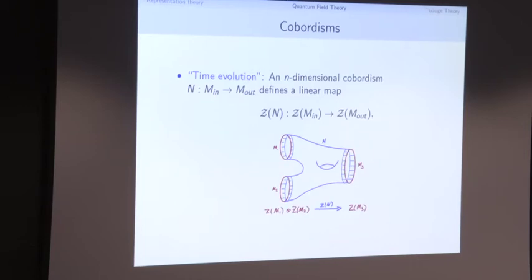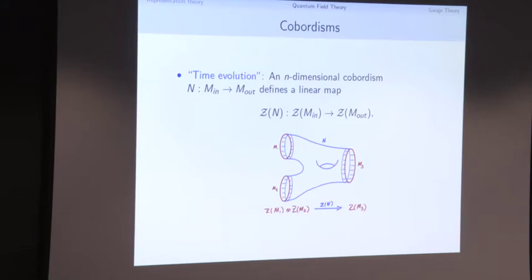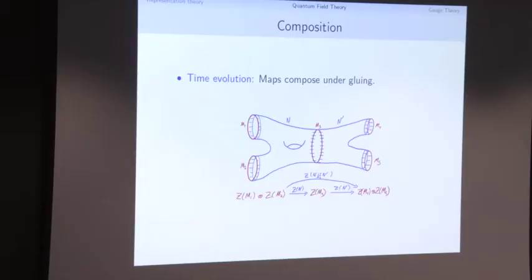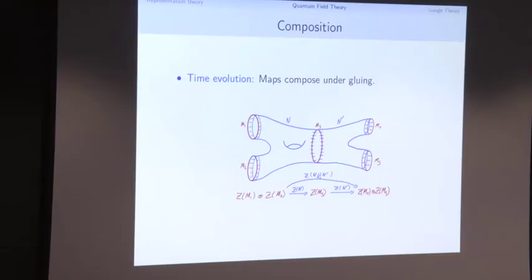Time evolution also becomes much more interesting — it becomes a geometric process. Whenever we have a Riemannian n-manifold M that is a cobordism from some incoming (n−1)-manifold to an outgoing one, that cobordism gives an operator from the incoming Hilbert space to the outgoing Hilbert space. Composition is given geometrically: if we glue cobordisms together, the operators are supposed to compose. For example, we have an operator going from states on M₁ ∪ M₂ to states on M₄ ∪ M₅, given by composing two cobordisms glued along a middle manifold.